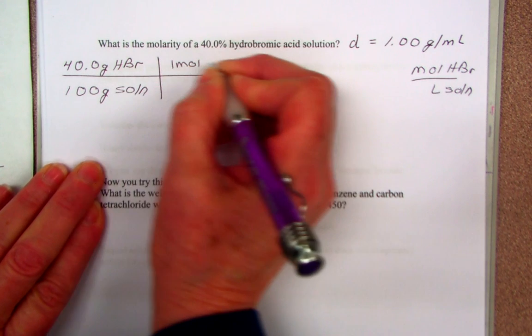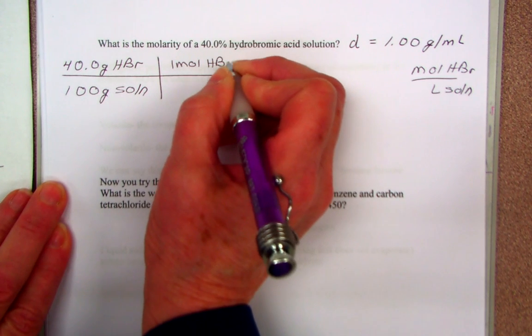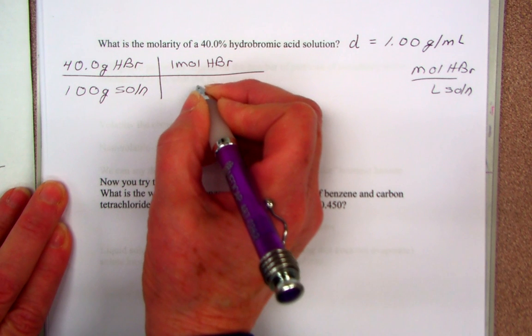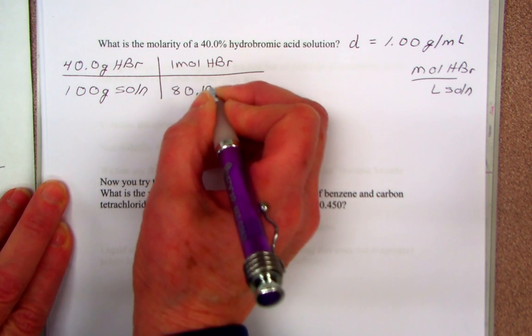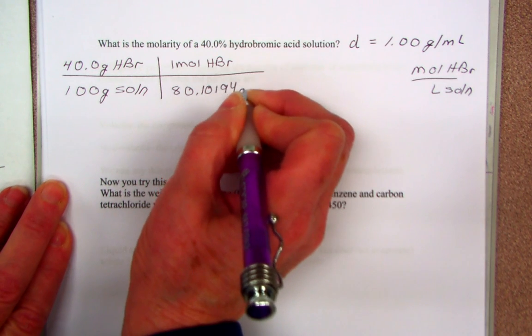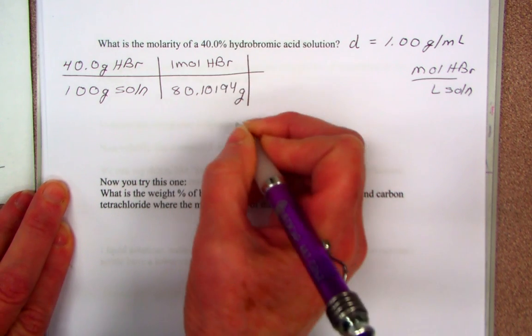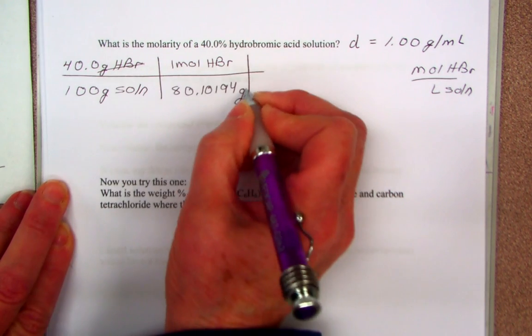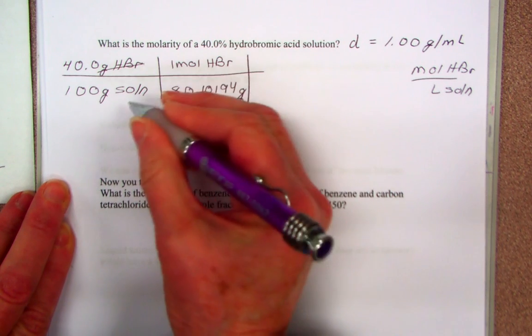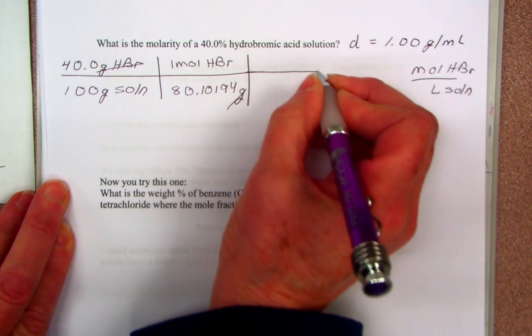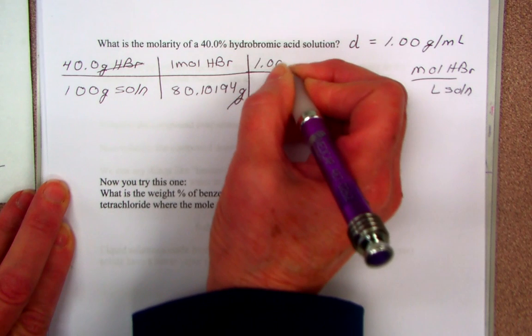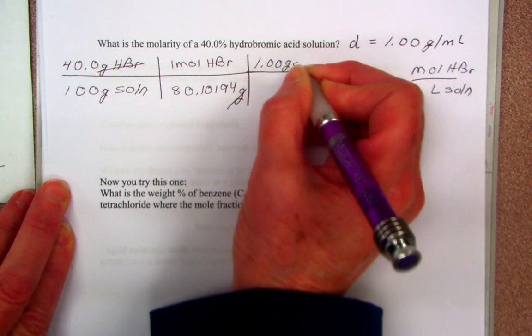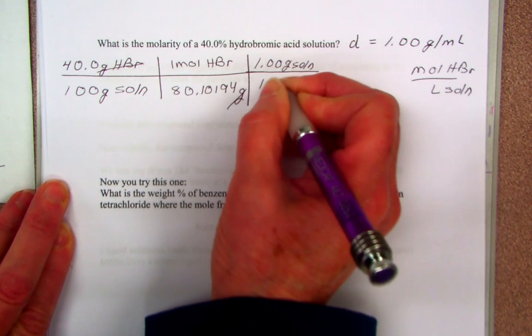One mole of HBr has a mass of 80.10194 grams. So I've canceled my grams of HBr. Now I have moles per 100 grams and I want moles per liter, so I use my density: 1.00 grams of solution is one milliliter of solution.